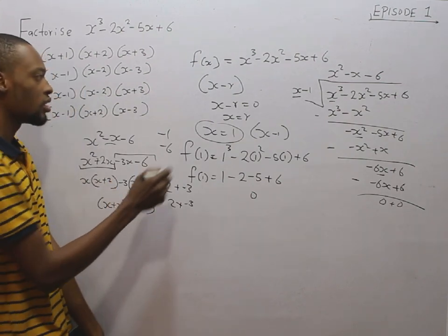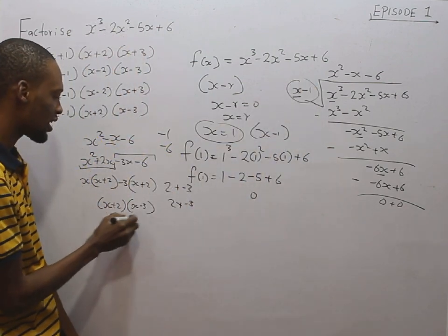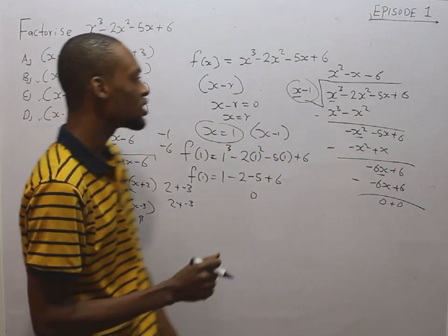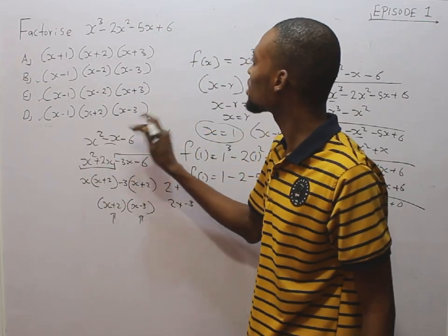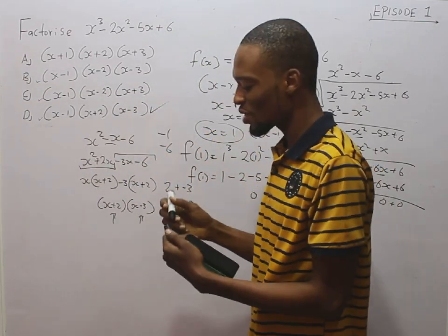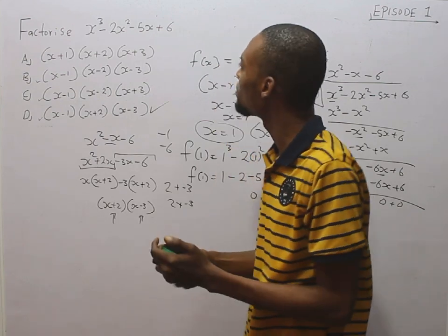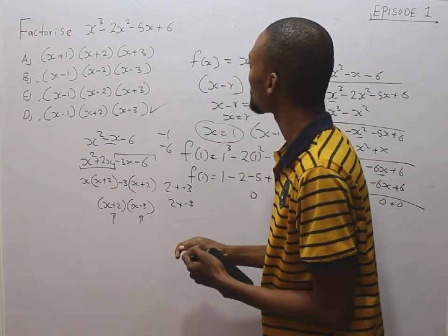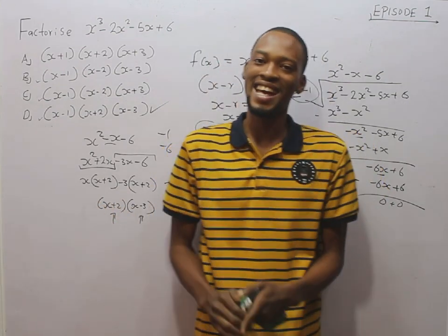So s plus 2 is the second factor, and s minus 3 is the third factor. The first factor is s minus 1, the second factor is s plus 2, and the third factor is s minus 3. These are the three factors of the polynomial s cubed minus 2s squared minus 5s plus 6.